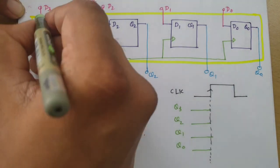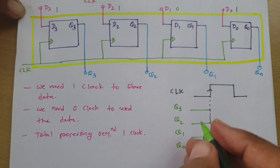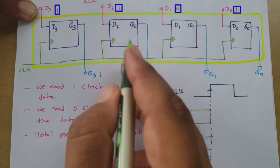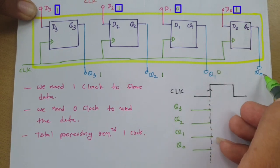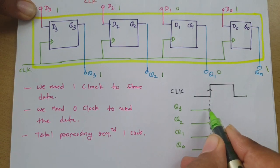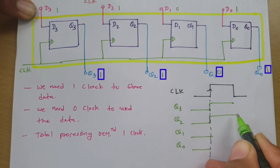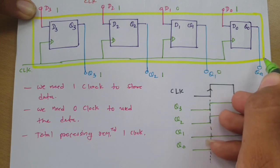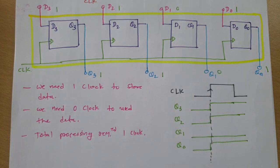After the clock, the output will be similar to the input. If the input is 1101, then after the clock: Q3 becomes 1, Q2 becomes 1, Q1 becomes 0, and Q0 becomes 1. So with respect to the clock you will find the output appears, giving Q3=1, Q2=1, Q1=0, Q0=1.